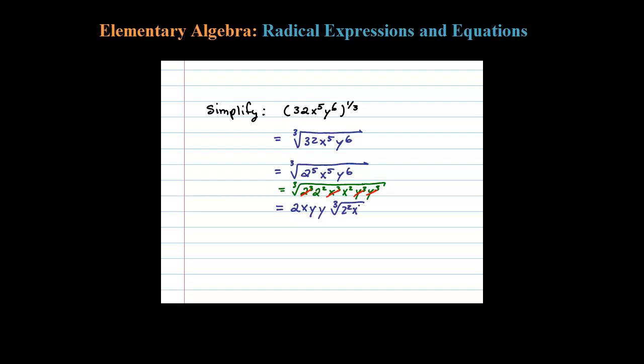And then for our final step, once we see that we just simplify this further. We have 2xy squared times the cubed root of 4x squared, and that's our final answer. There is a way to